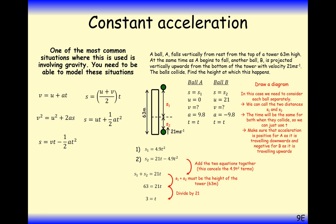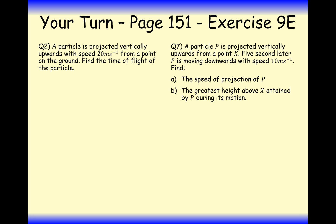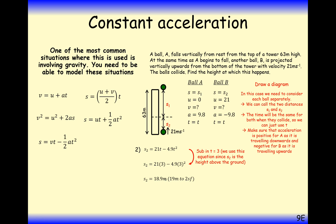T is not the final answer — it equals 3 seconds after both balls are released. To find the height at which they collide, substitute T equals 3 into the formula for S2, which gives the height above the ground as 18.9 metres, or 19 metres to two significant figures.